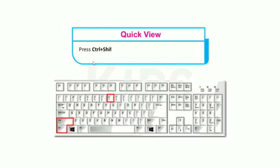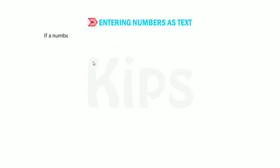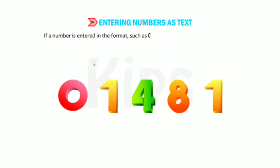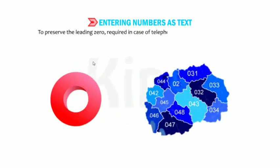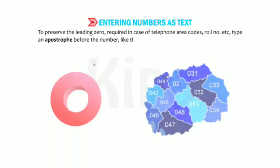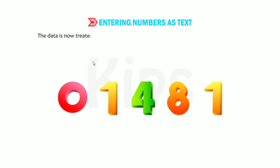Press Ctrl+Shift+7 to apply an outline border around the selected cell or range of cells. Now we will discuss entering numbers as text. If a number is entered in a format such as 01481, Excel will drop the leading zero. To preserve the leading zero, as required in the case of a telephone area code, type an apostrophe before the number — like apostrophe 01481. The data is now treated as text and displayed in the same format as it was entered.